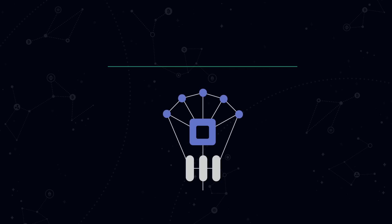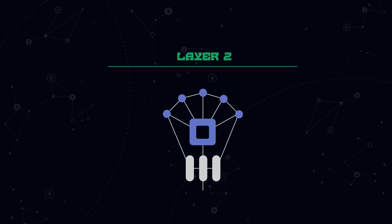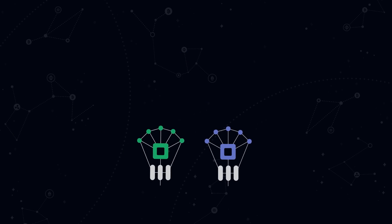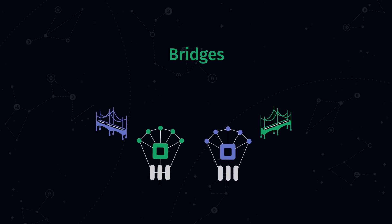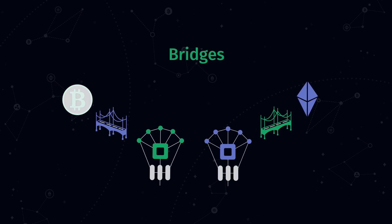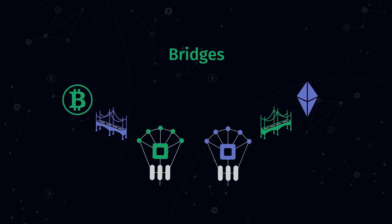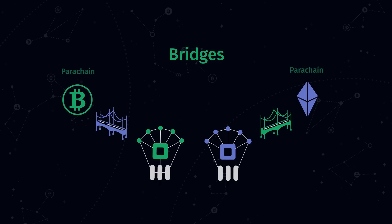Parachains can also have layer twos built on top of them. Polkadot's parachains can also function as bridges, connecting the ecosystem to external blockchains like Ethereum or Bitcoin. The system takes external networks connected by bridges as parachains.